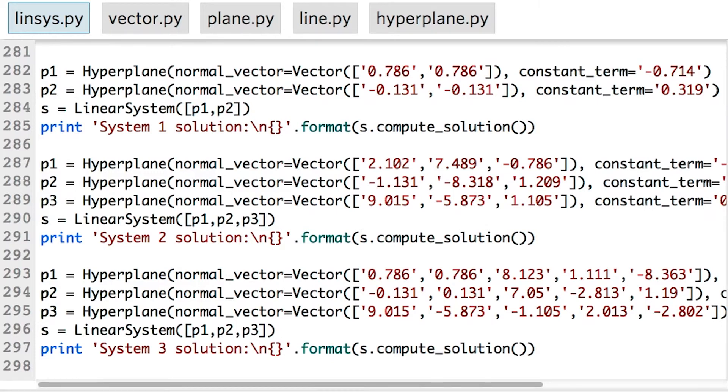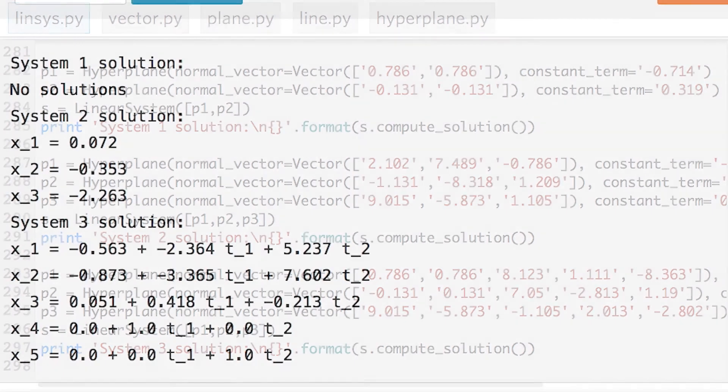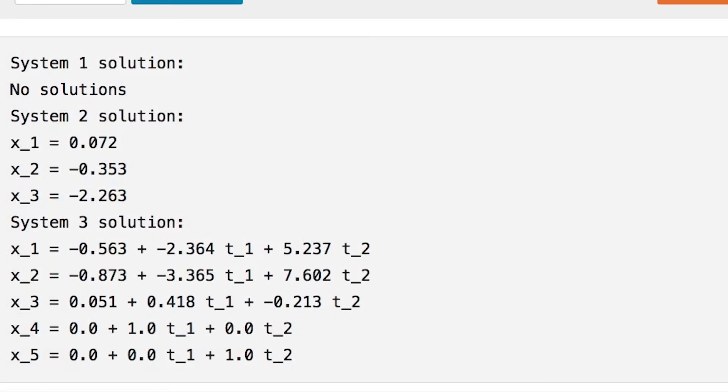Here I have a system of lines, here I have a system of planes, and here I have a system of four-dimensional hyperplanes in five-dimensional space. And running the code, I obtain parameterizations of the solutions for each of the systems, or I'm told that the system doesn't have a solution.